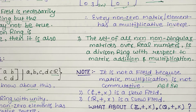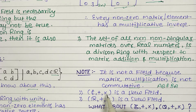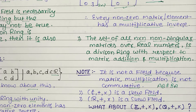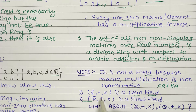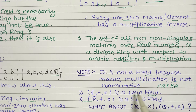Now let's discuss some simple rings. The set of complex numbers: it is a ring, a ring with unity, a commutative ring with unity, and every non-zero element has a multiplicative inverse — so it forms a field, and therefore also a skew field. The set of real numbers: it is a commutative ring with unity, and every non-zero element has a multiplicative inverse — so it also forms a skew field.